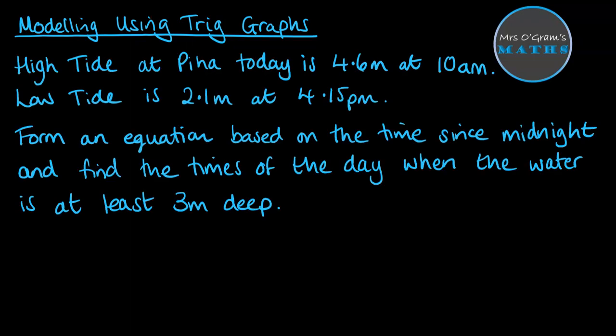This is the situation we're going to do: modeling high tide at Piha. High tide at Piha today is 4.6 meters and that happens at 10 a.m. Low tide is 2.1 at 4:15 p.m. Now if you've ever looked up tidal charts and seen them plotted on a graph, you'll see it follows a sine wave type of curve, or cosine if you wanted to model it that way as well.